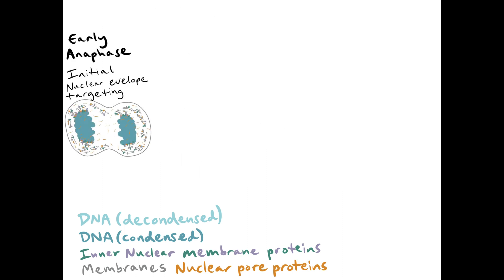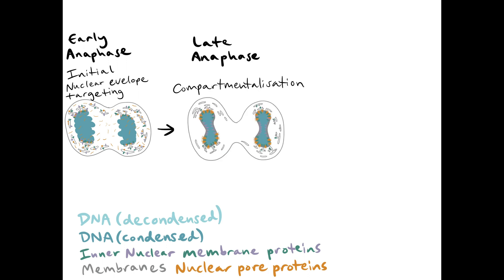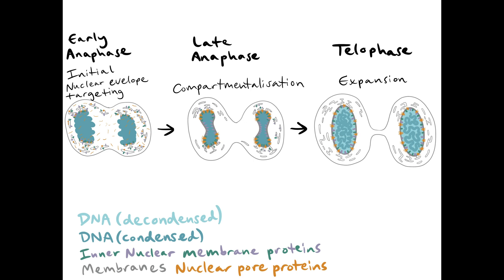Initial nuclear envelope and protein targeting occur in early anaphase. Within minutes, membrane fusion events and nuclear pore complex assembly produce compartmentalized nuclei. As cells enter telophase, nuclei continue to reshape and expand.